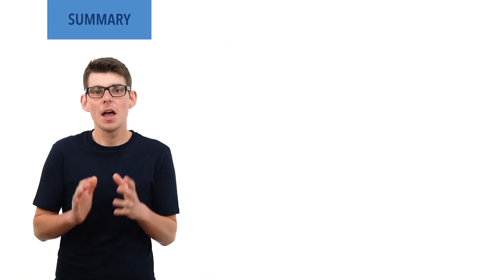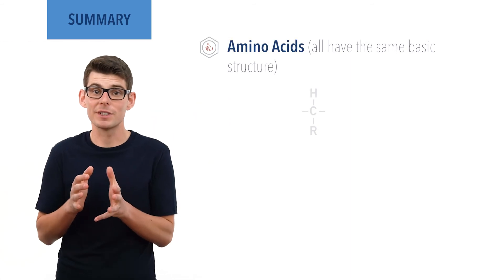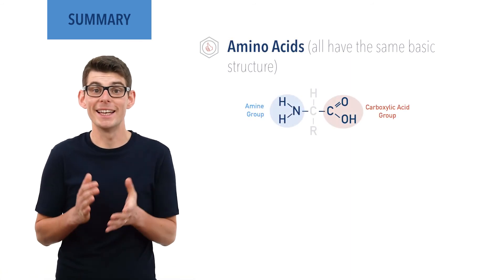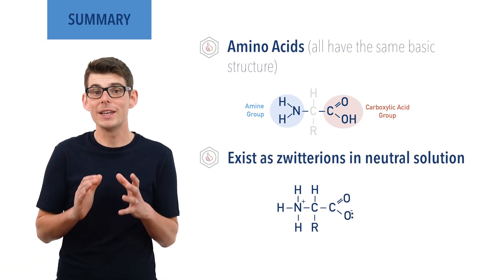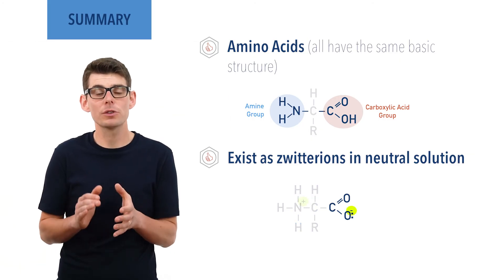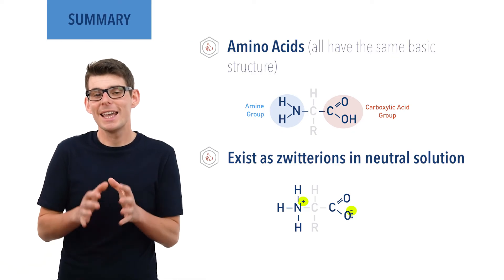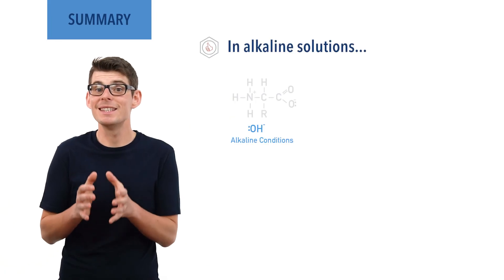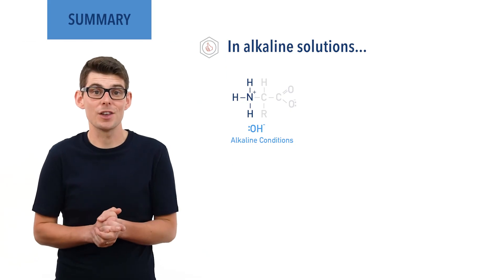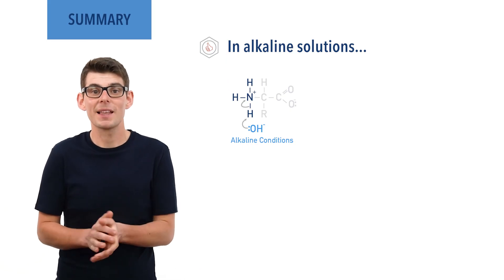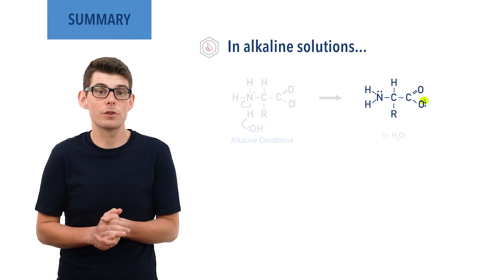To summarize: amino acids are a group of compounds that all have the same general structure with a carboxylic acid group and an amine group. In a neutral solution and in solid state, amino acids exist as zwitterions with a negatively charged carboxylate group and a positively charged ammonium ion group — there is no overall charge. In alkaline solutions, amino acids exist as negatively charged ions because the ammonium group from the zwitterion loses its extra H+ ion to reactive OH- ions, leaving behind the negatively charged carboxylate ion and now a neutral NH2 amine group.